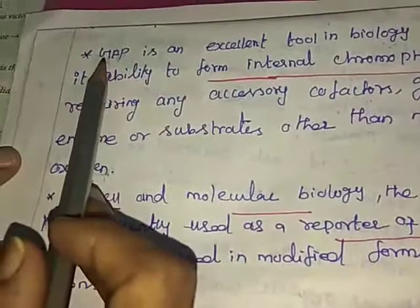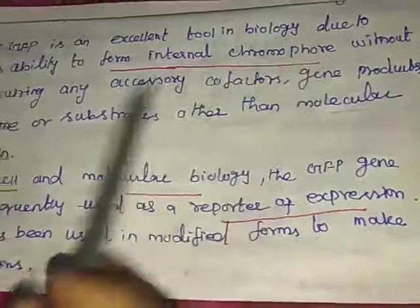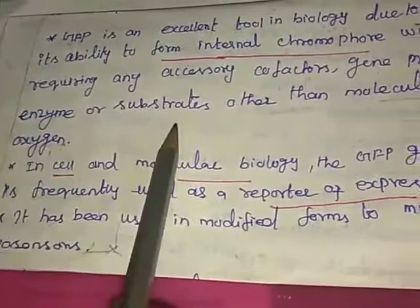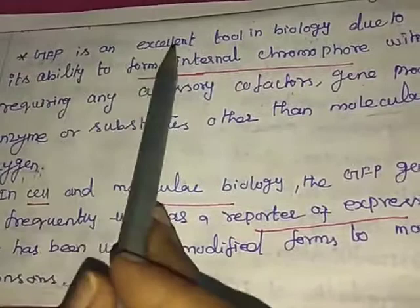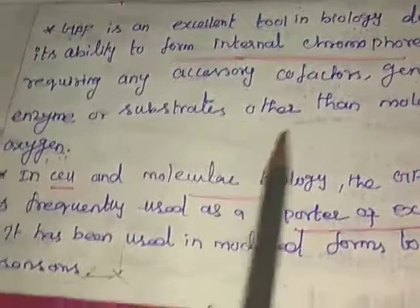The green fluorescent protein is an excellent tool in biology due to its ability to form an internal chromophore without requiring any accessory cofactors, gene products, enzymes, or substrates other than molecular oxygen.